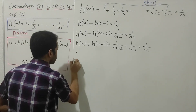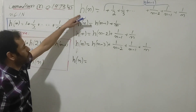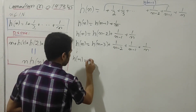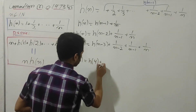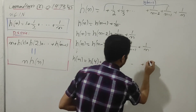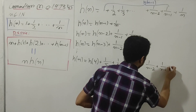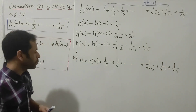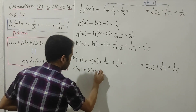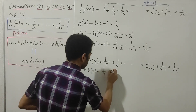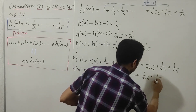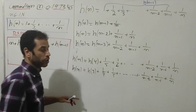This expression continually repeats on the same pattern all the way down. We will have H(n) equals H(4) plus 1/5 plus 1/6 and all the way down to 1/(n-2) plus 1/(n-1) plus 1/n. For the following expression, H(n) equals H(3) plus 1/4 plus 1/5 and all the way down to 1/(n-2) plus 1/(n-1) plus 1/n.